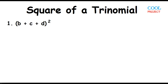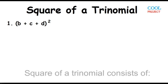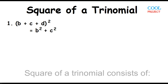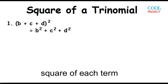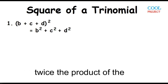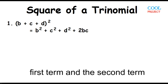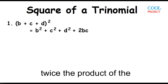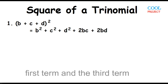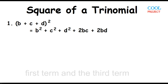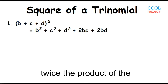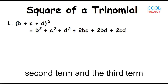The square of the quantity B plus C plus D. The square of a trinomial consists of: the square of each term, twice the product of the first term and the second term, twice the product of the first term and the third term, and twice the product of the second term and the third term.